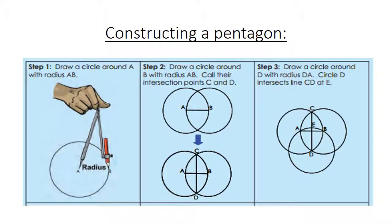Now we are going to construct a pentagon. Step number 1. You draw a circle around A with radius AB.